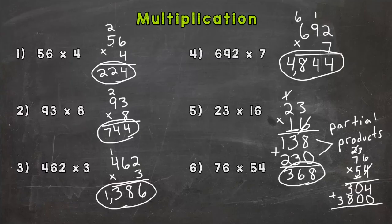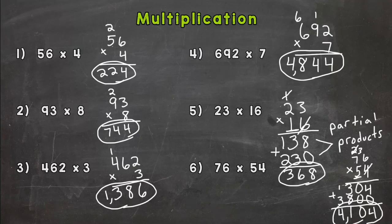Add these two partial products together to give us our product. 4 plus 0 is 4, 0 plus 0 is 0, 3 plus 8 is 11, carry my 1, and 1 plus 3 is 4. Put my comma in, circle my answer, and my product is 4,104.